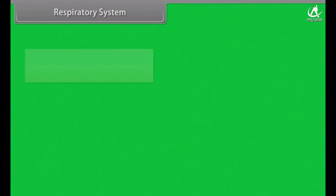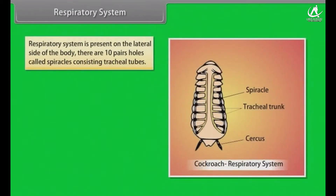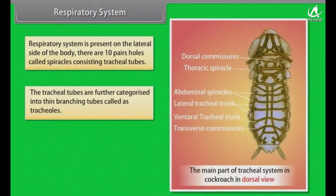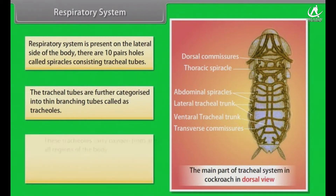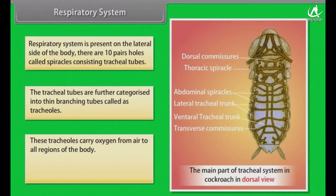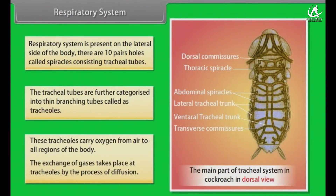Respiratory system. The respiratory system is present on the lateral side of the body. There are 10 pairs of holes called spiracles consisting of tracheal tubes. The tracheal tubes are further categorized into thin branching tubes called tracheoles. These tracheoles carry oxygen from air to all regions of the body. The exchange of gases takes place at tracheoles by the process of diffusion.